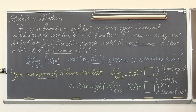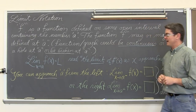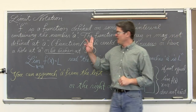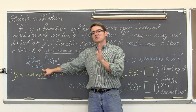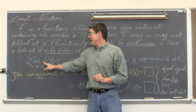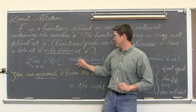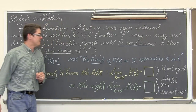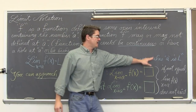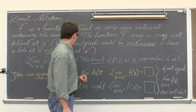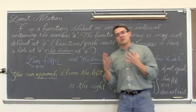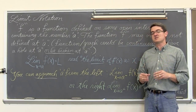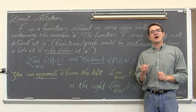A function graph could be continuous, or have a hole, or be broken at a. The notation is: the limit as x approaches a — we are going to let our x values approach some particular value of a — the limit of a function is equal to L. The limit of f of x as x approaches a is L. This value of L is a y value. The limit of a function is the y value that the graph approaches.